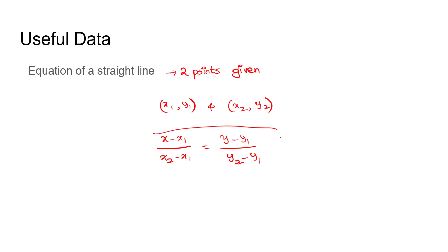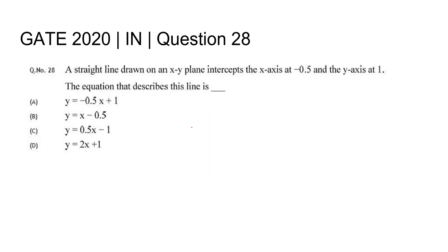By using this two point formula, we can find out the equation of this straight line. Because we have two points given, x-axis intercept is known, y-axis intercept is also known. We can find out the equation of this straight line by using this formula.